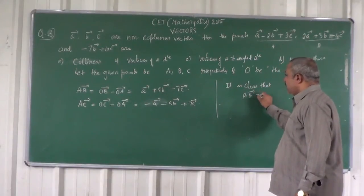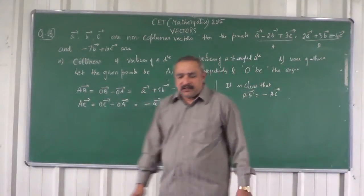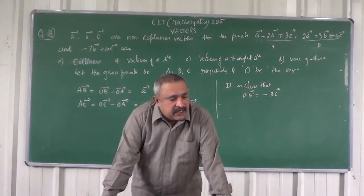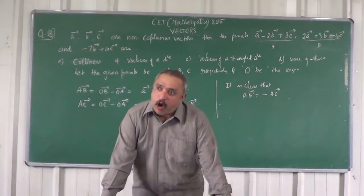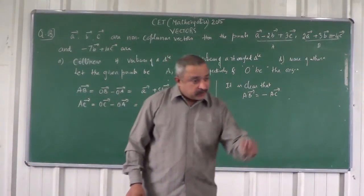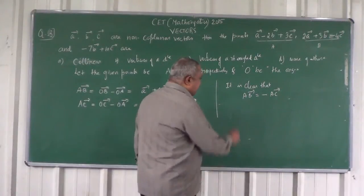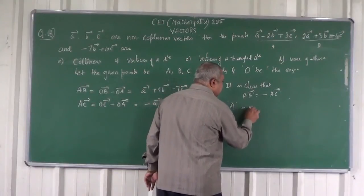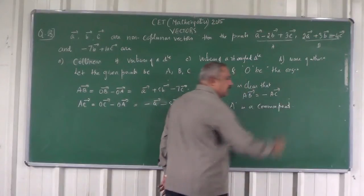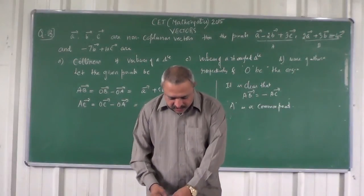It is clear that vector AB is equal to minus of vector AC, and A is the common point. Therefore, the points A, B, C are collinear.